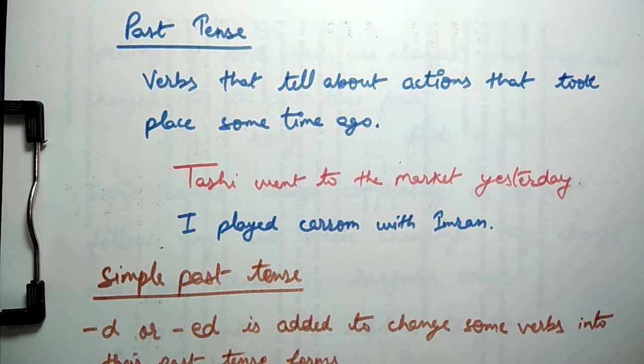Verb jo hame actions ke barre me betayen jo kuch samay pehle hue the, past tense me hote hain. Jaise Tashi kal market gayi thi. Maine Imran ke saath carom khela tha.